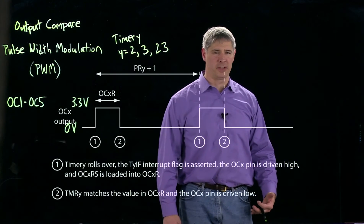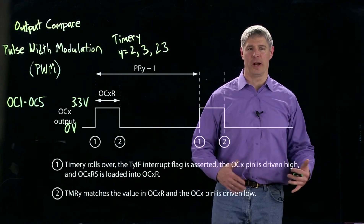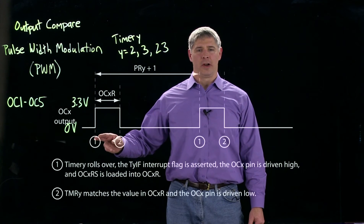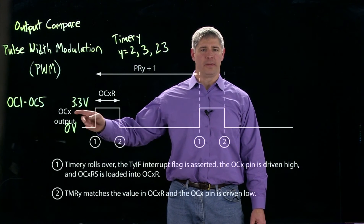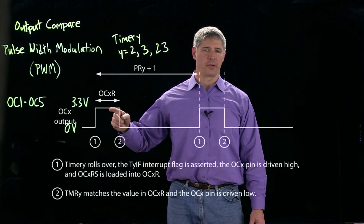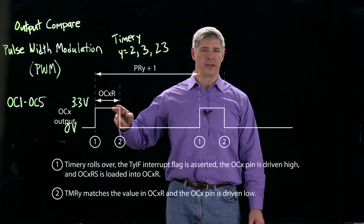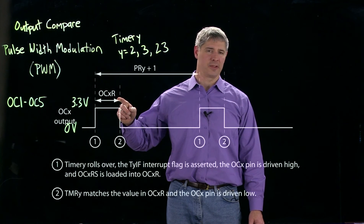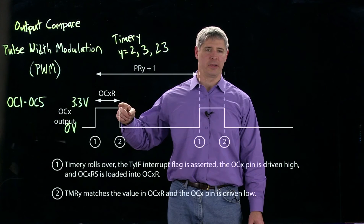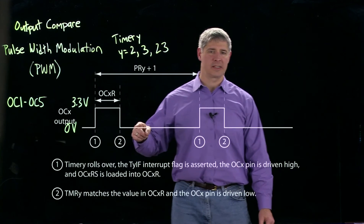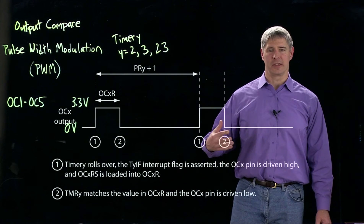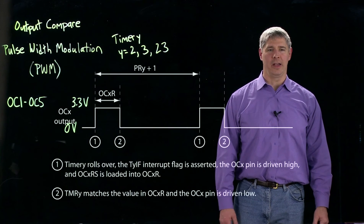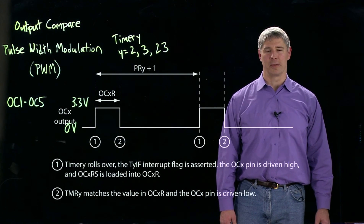The first event at time 1 is when the timer rolls over. We've already learned how to set up a timer to roll over after a specific amount of time. When that timer rolls over, the output value of output compare X goes to 3.3 volts. It stays at that value until timer Y reaches the value OCXR — OC1R, for example — and then it drops low, staying low until the timer rolls over again.